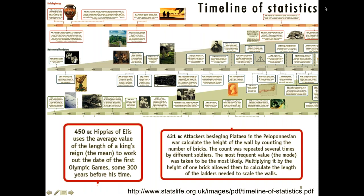The timeline of statistics shows that statistics in one form or another has been around for centuries. One of the earliest examples is from 450 BC — basically the use of averages. So average is going to be our first topic. You can glance through this timeline and get an idea of some interesting anecdotes and the progress of how to evaluate statistical information.